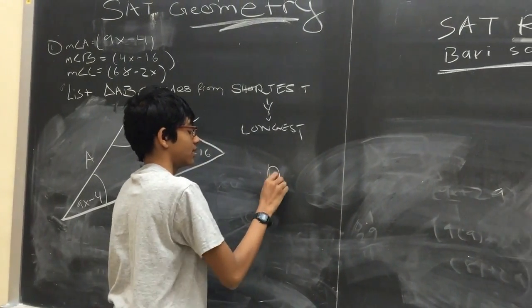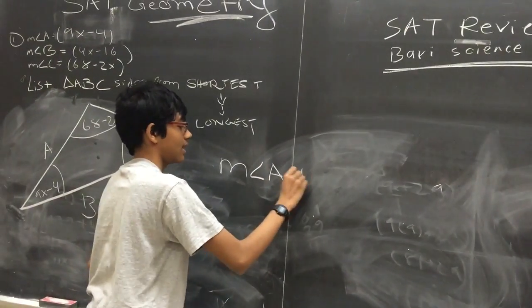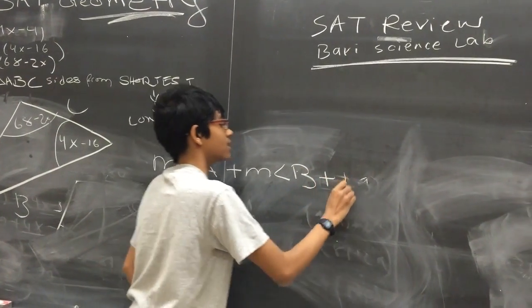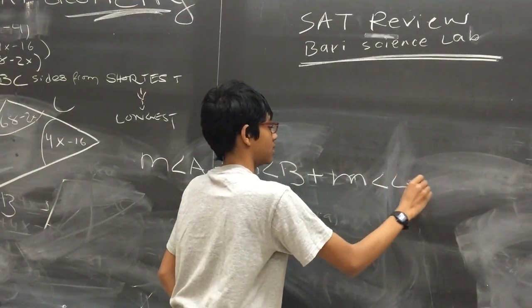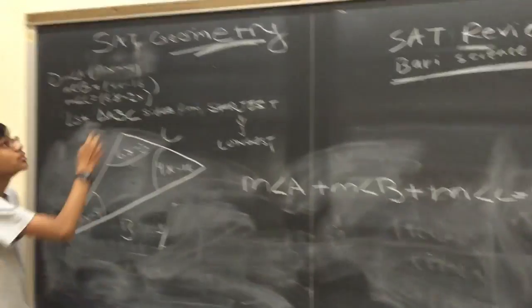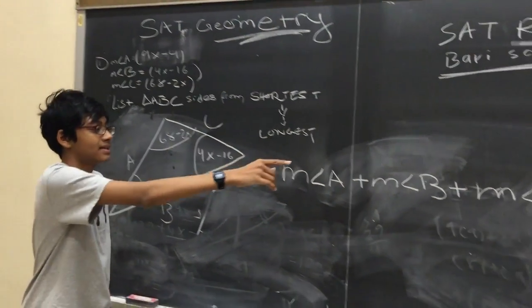We know that the measure of angles A plus B plus C should equal 180. So now what we're going to do is substitute each of these expressions and set them to 180.